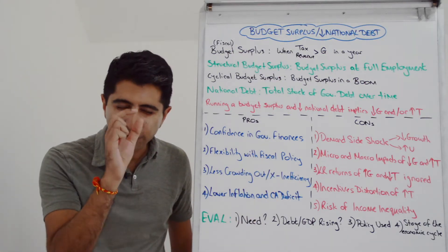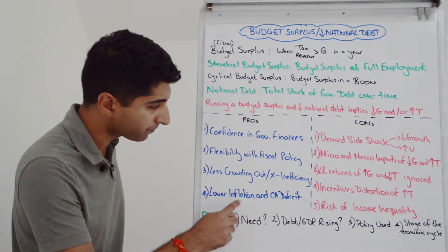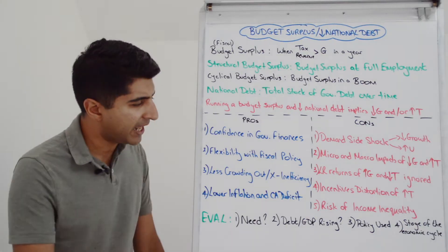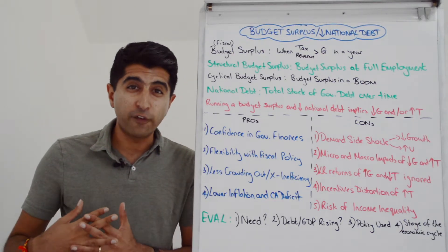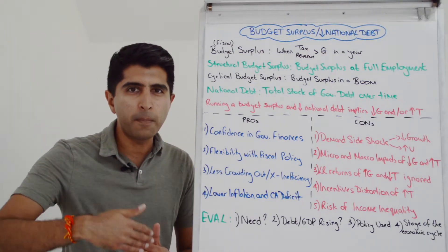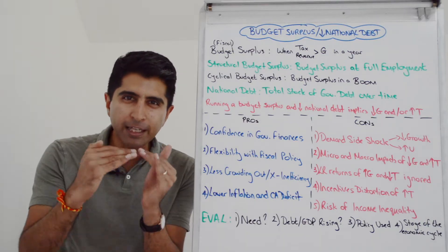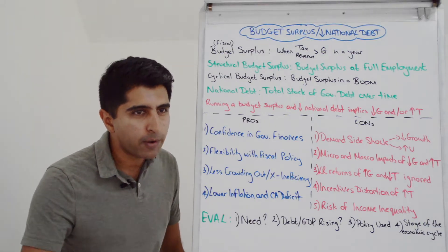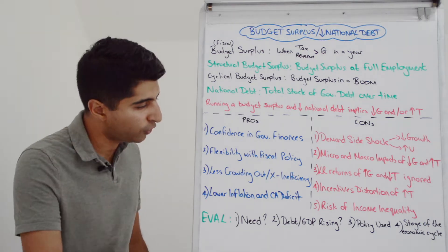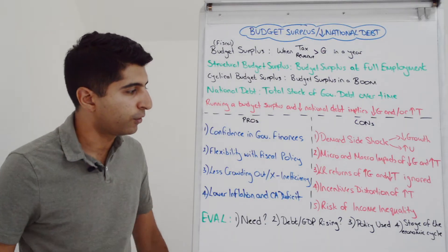Free marketeers would argue that with less debt-fuelled government spending, there'll be less crowding out of the private sector, less detraction of private sector investment, because there won't be as much pressure on demand in the loanable funds market, keeping interest rates relatively low and allowing private sector firms to borrow at lower interest rates and fund their investment projects. Good news for growth, short-run and long-run, and also for balanced growth in the economy.